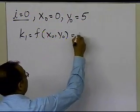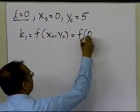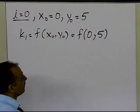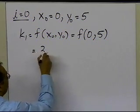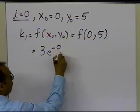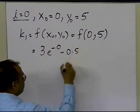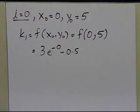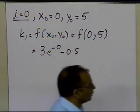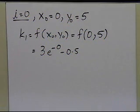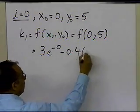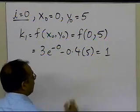Now let's find k1. k1 is the value of the function at x0 = 0, y0 = 5. That gives us f(0, 5), which is 3e to the power of minus 0, minus 0.4 times 5, because k1 uses 0.4 times the value of y. This value turns out to be 1.